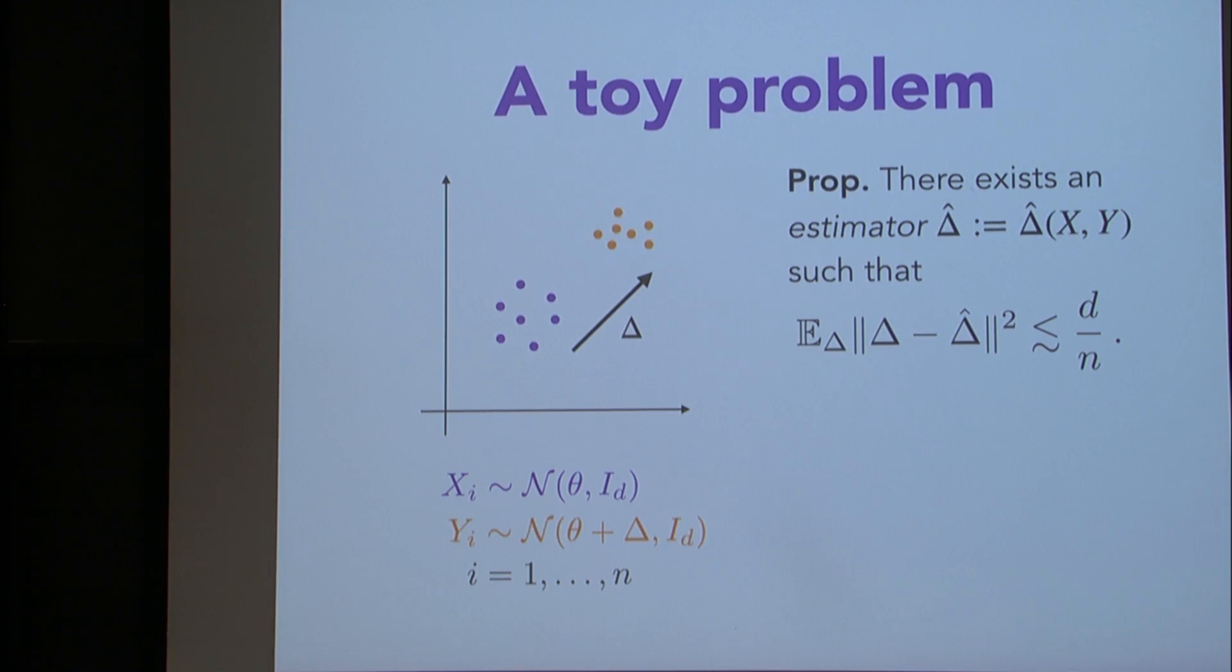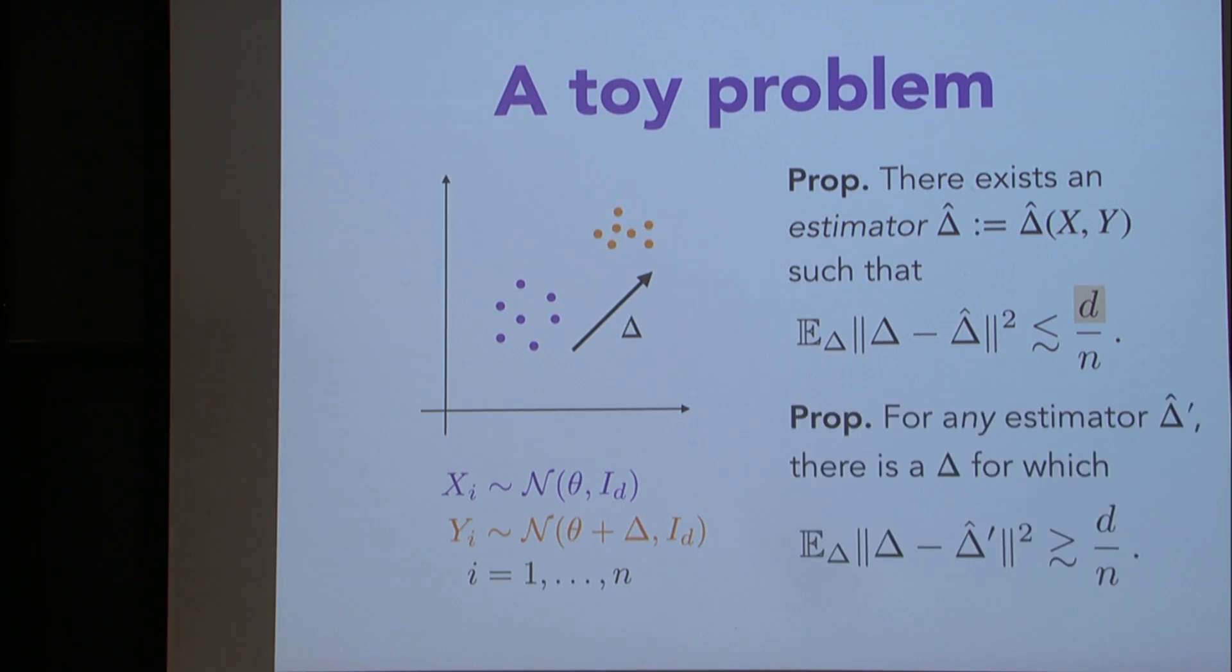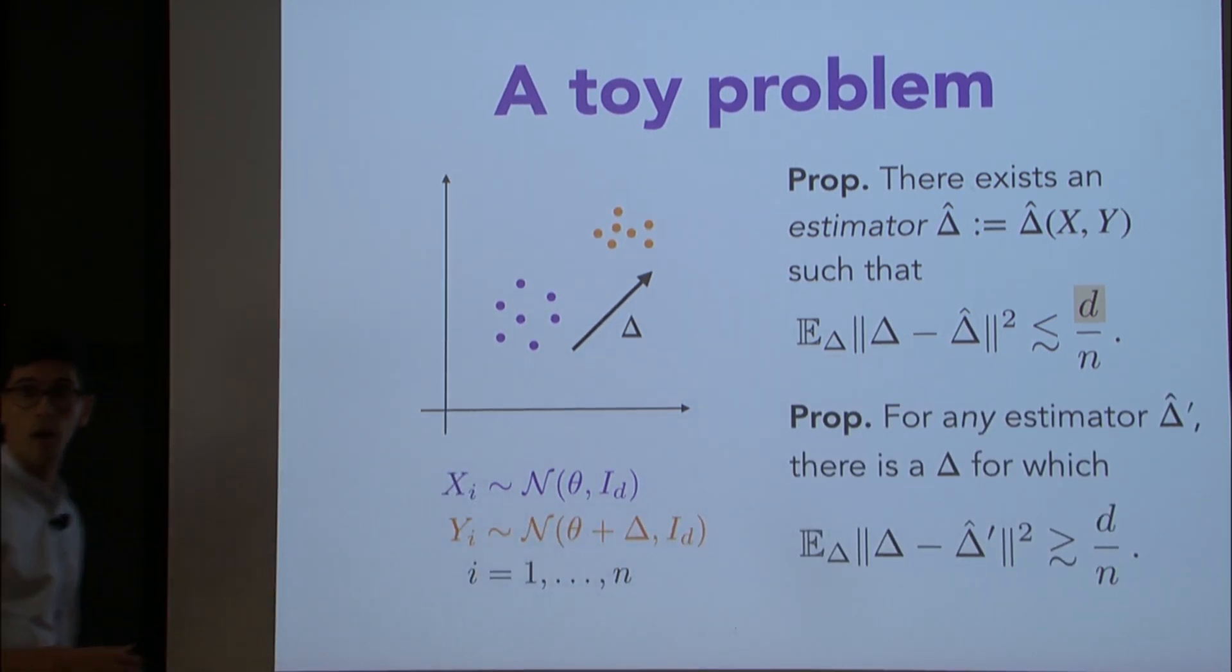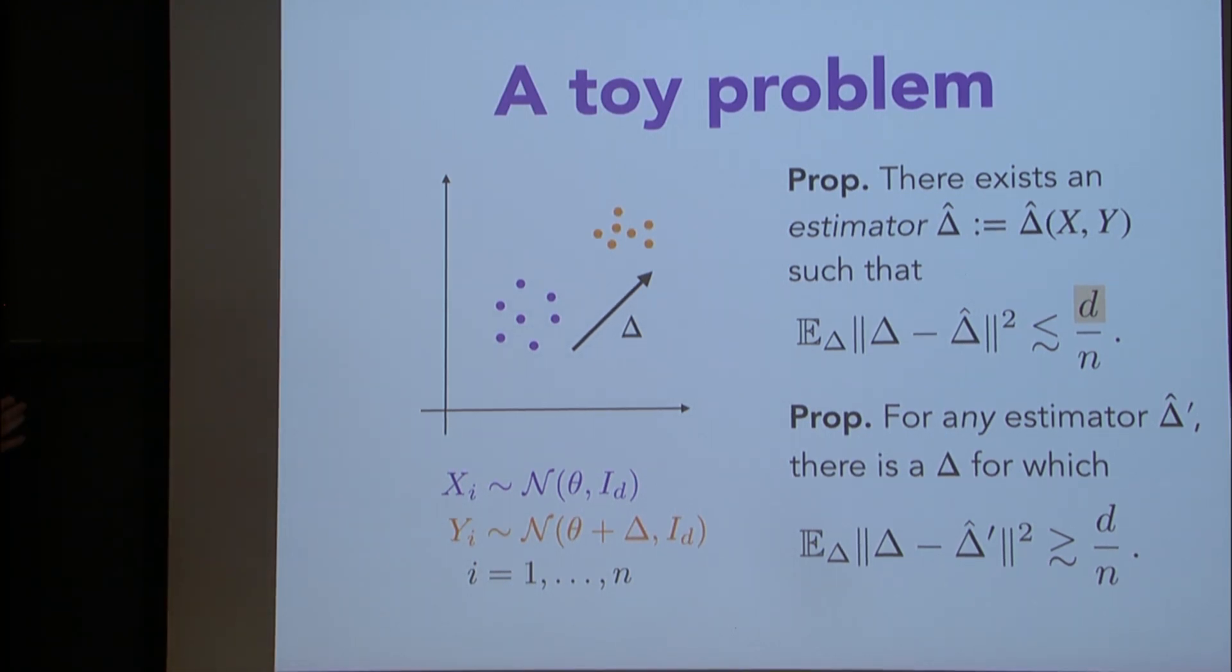But the starting question in the high dimensional regime is, to what extent can we understand the necessity of this dependence on the ambient dimension d? This seems like a question. In low dimensions, it's fine, but this could lead to a degradation of our guarantee if the dimension of our data is super huge. And unfortunately, one can show in this toy example that the d is unavoidable. I mean something stronger, namely that any estimator that you think up is bound to incur an error of at least this order on some perturbation. So I have a guarantee that this particular estimator delta hat will achieve always d over n in expectation, and I can't in general do any better.